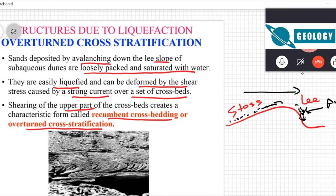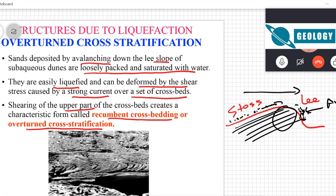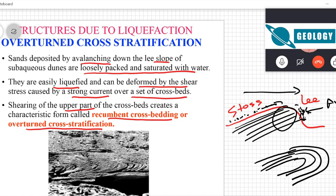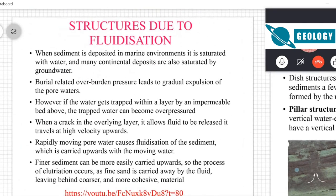Subaqueous dunes are underwater, so they are easily liquefied and deformed by shear stress from strong currents. The cross beds form due to dune migration and shearing of the upper part of the cross beds can deform them by liquefaction. This type of recumbent cross stratification is called overturned cross stratification because the younger strata are at the base and the older strata are on top.